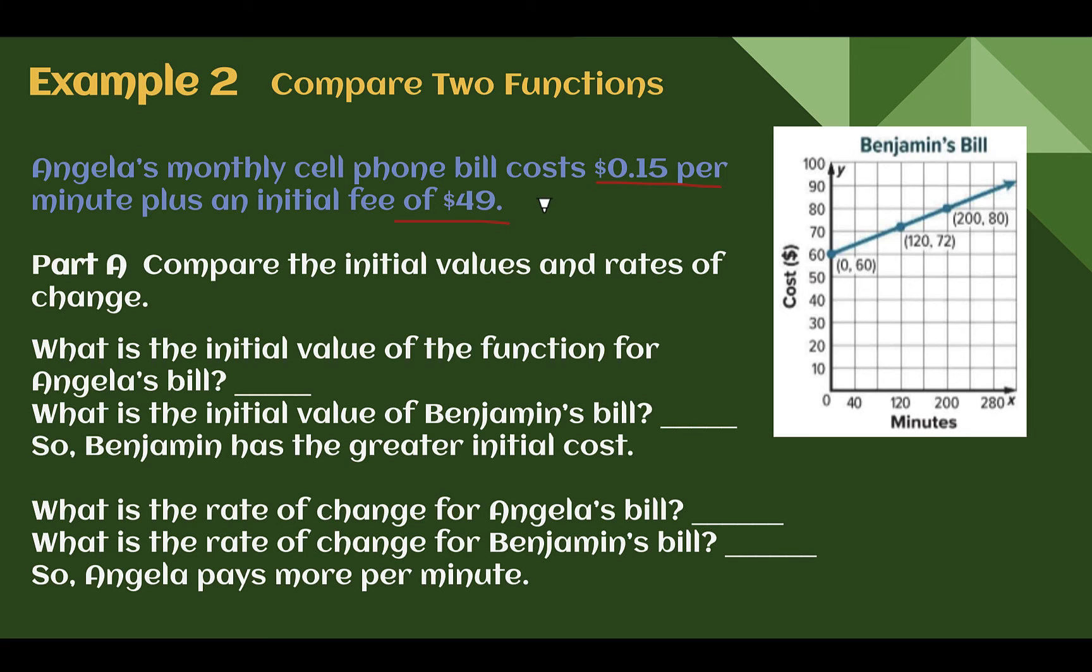So, from the words, it told us Angela's monthly cell phone bill was $0.15 per minute with an initial fee of $49.00. If we were writing this in an equation, we could have our equation Y equals $0.15 per minute with an initial fee of $49.00. I'm going to write it like this. That way, later when we want to know how much it is for 200 minutes, we can just substitute 200 in for X and solve for the total cost, which is Y.